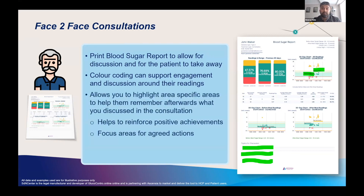By printing it out, you have the option to add comments or highlight areas on the charts. This could help reinforce positive achievements or, under the Topic for Discussion section, capture key items discussed and agreed actions to help Brian remember afterwards. You can then use the printout to summarise key points, and maybe in future, if Brian becomes more engaged with technology, he could pair his phone to his meter and connect to the free Contour Diabetes app.